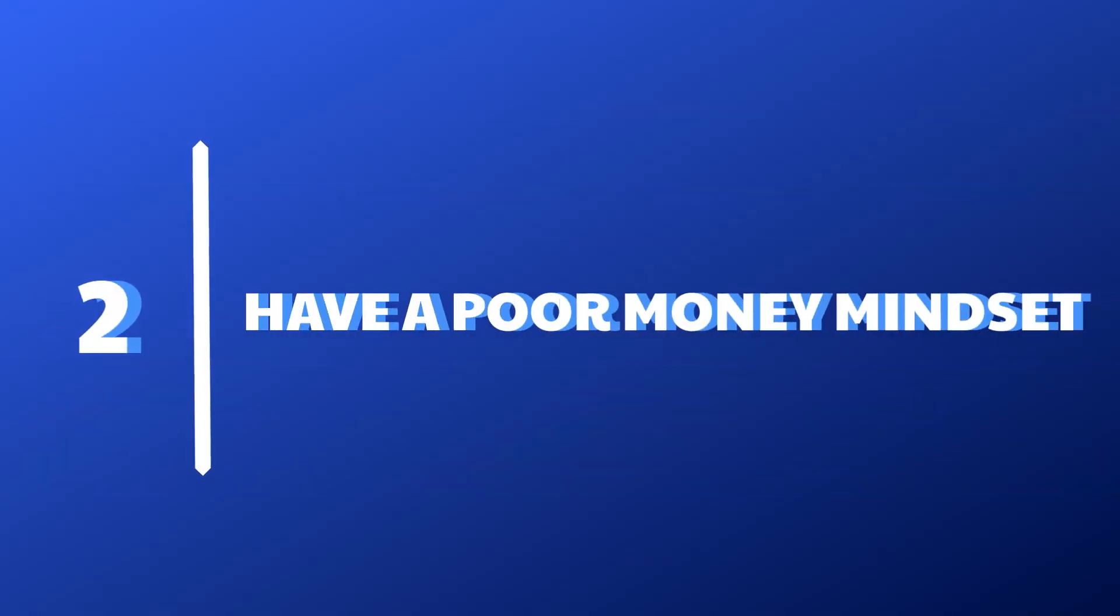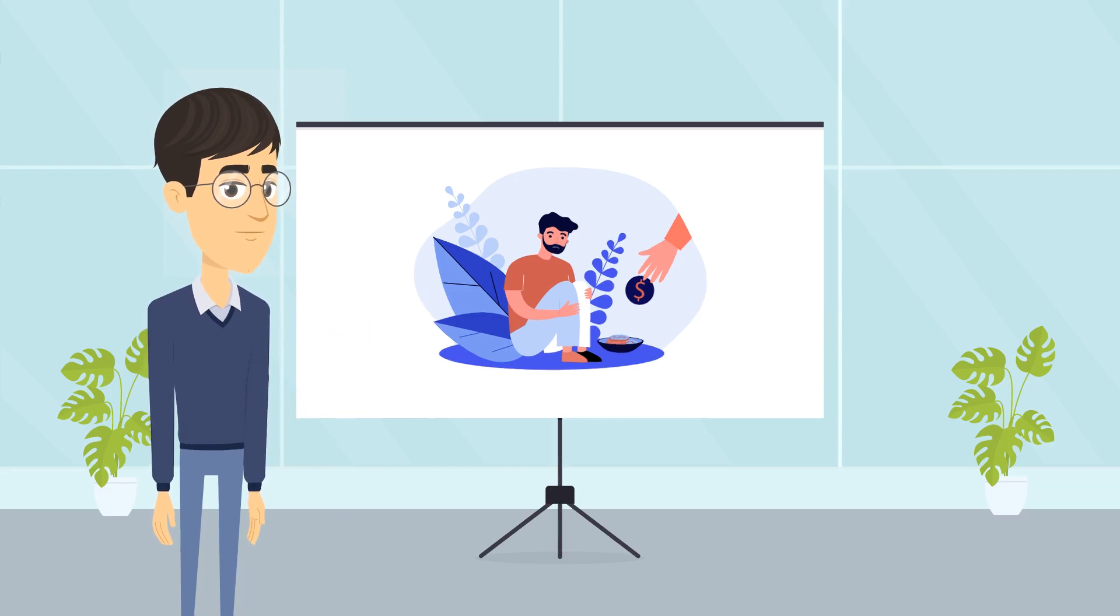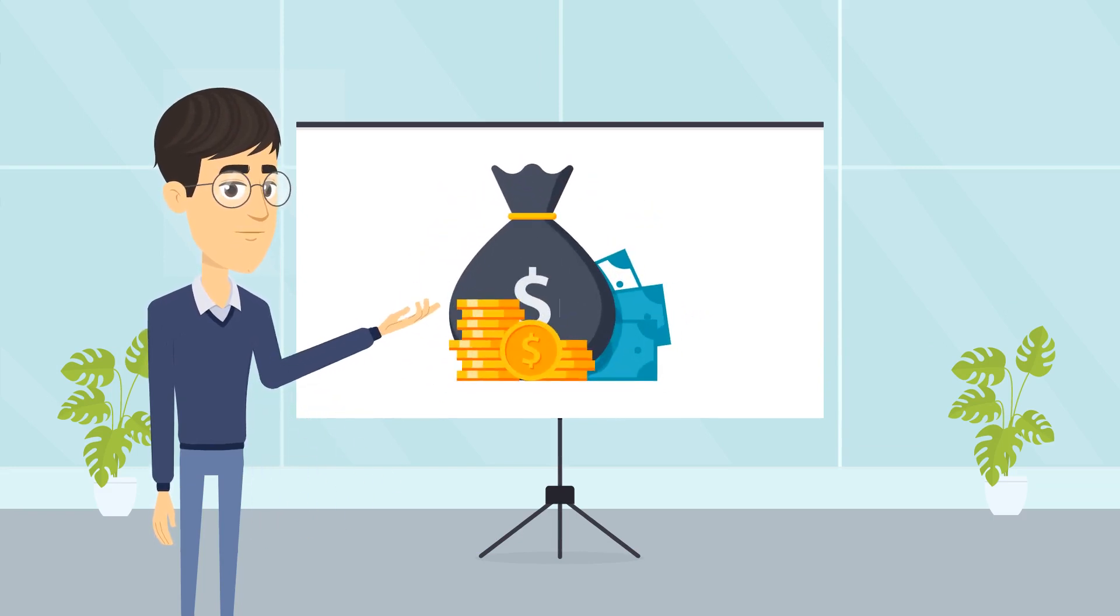Number 2: Having a Poor Money Mindset. Generally, the rich see poverty as the root of all evil and the poor see money as the root of all evil.